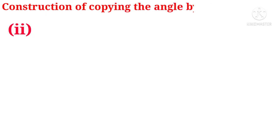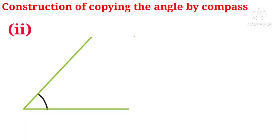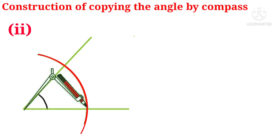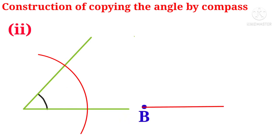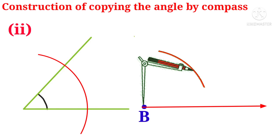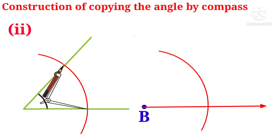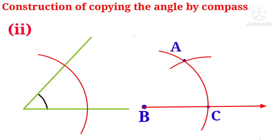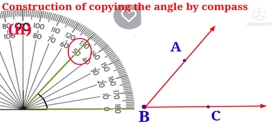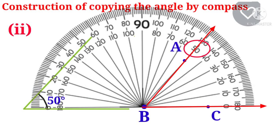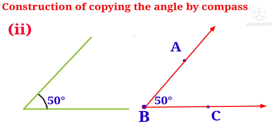Second problem: construction of copying the angle. Take the compass, put the sharp end at the corner with some radius, and draw an arc. Take a point B and draw a ray through it. With center B and the same radius, draw the same arc. Take the length of the arc as radius and draw an arc cutting the previous arc. The intersecting points are identified and named A and C, then join B and A with a ray — angle ABC is formed. The problem figure shows 50 degrees and the copied angle also shows 50 degrees — correct copied angle is constructed.